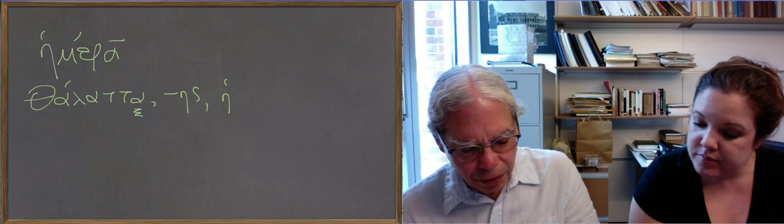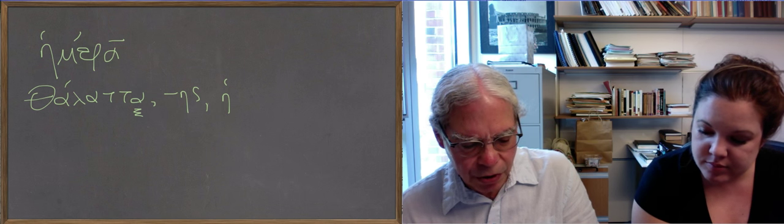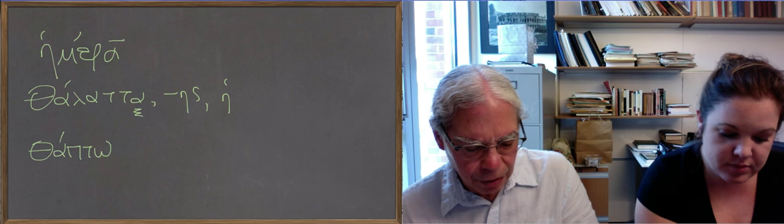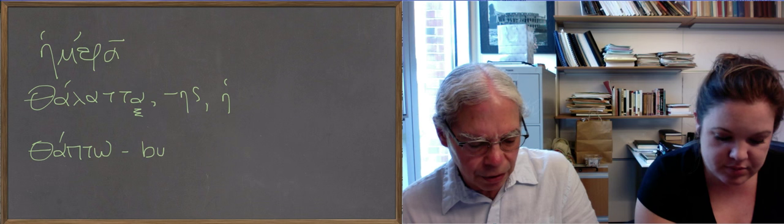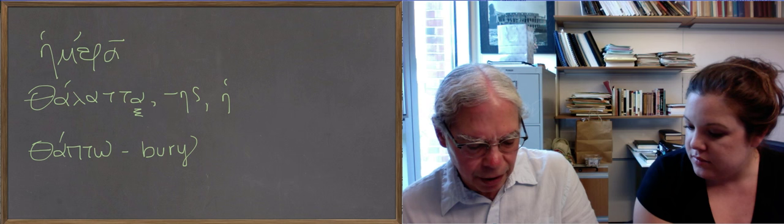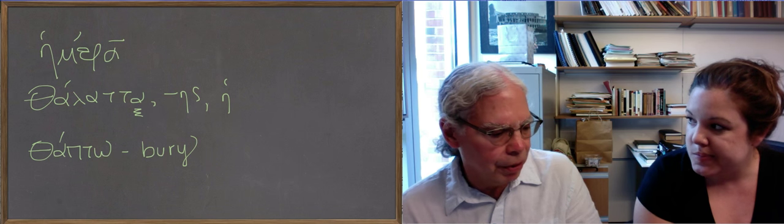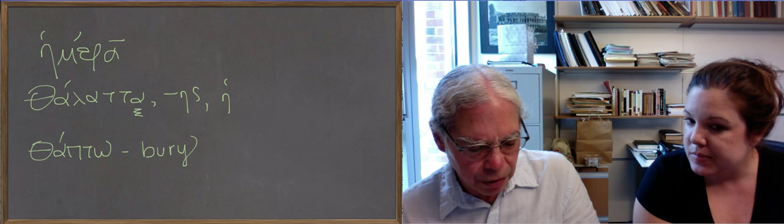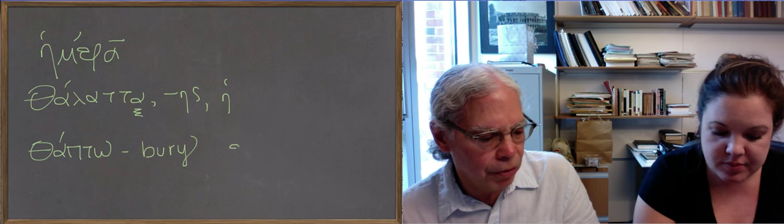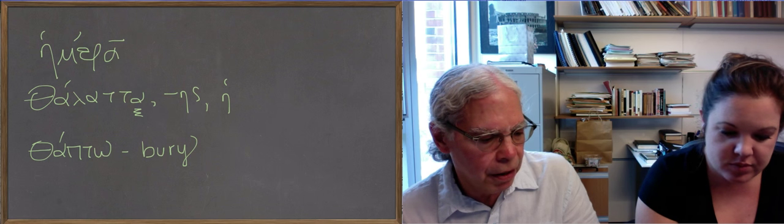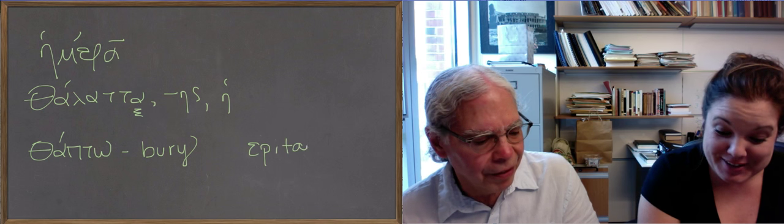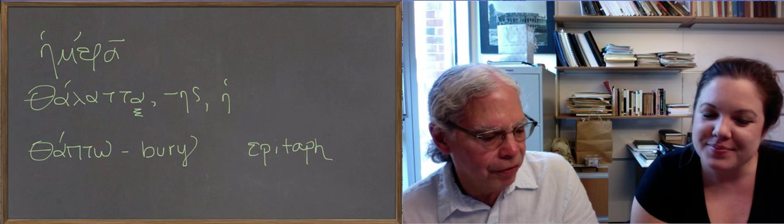And we get the verb thapto, thapso, ethapsa, which means to bury. Thapto, thapso, ethapsa. There's no perfect active form. There's a perfect middle form and an aorist passive form of it: tethammai, etaphen. We haven't learned those things yet in this lesson, but you will. It's the same root as you have in the English word epitaph. So the actual Greek root of thapto was theta, alpha, phi.